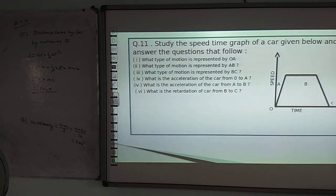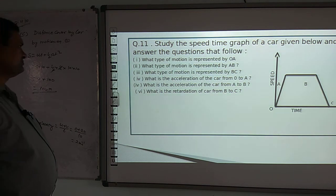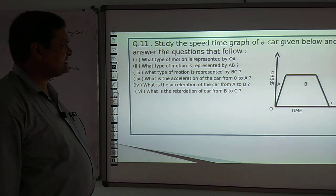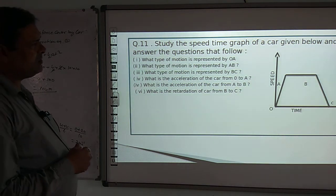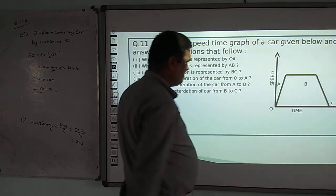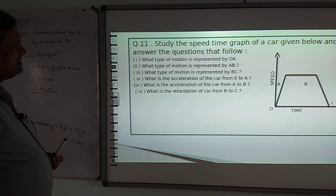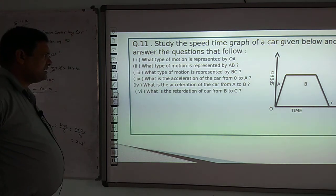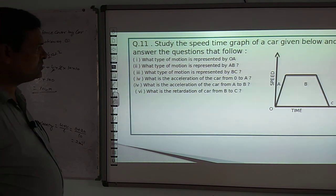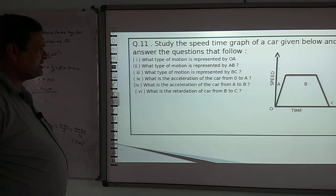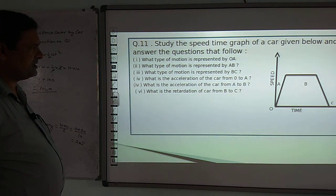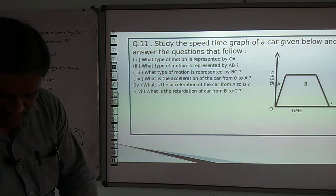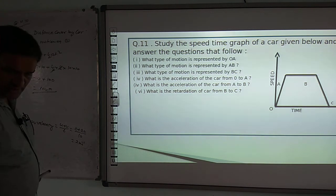Study the speed-time graph of a car given below and answer the questions that follow. From this graph we have 5–6 questions to answer. The first asks: what type of motion is represented by OA? The graph also asks about acceleration from A to B and retardation from B to C. Let's go to the solution.